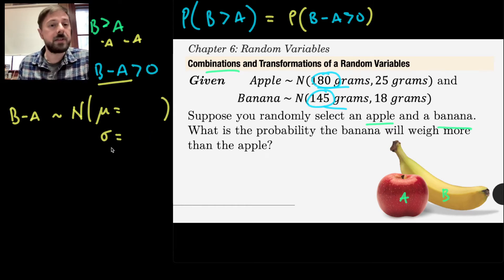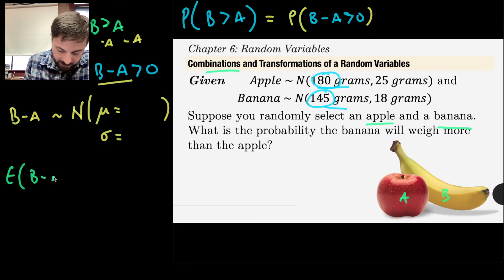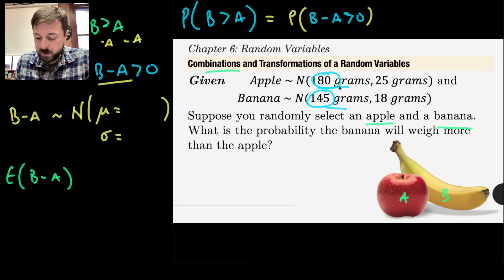I know that the distribution shape is normally distributed, but now I still need two other parameters. Remember, for all normal distributions, we need to understand the mean and we also need to understand its standard deviation. Well, that's just the same thing as expected values, at least for the mean.